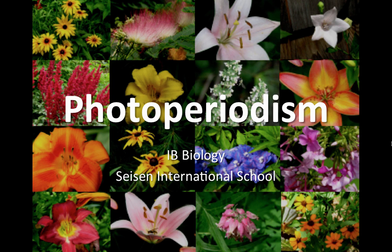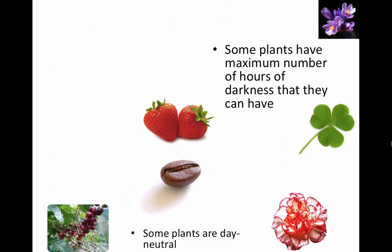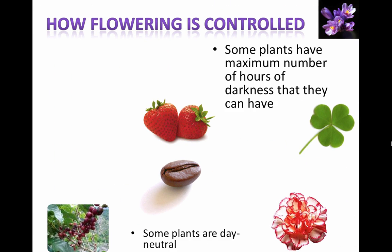Let's look at photoperiodism, or a fancy way of saying how do we control flowering in plants. So how do plants know when to flower, and how come certain types of flowers only flower in the summertime, and some only come out in the spring or the autumn? No wonder why most of them don't come out in the winter — it's a little bit too cold. Enzymes probably aren't going to be working at their optimal levels when it's really cold outside.